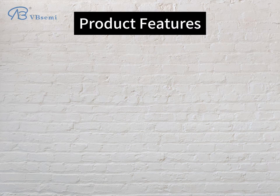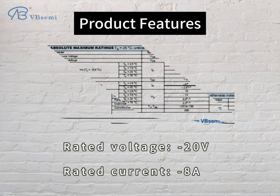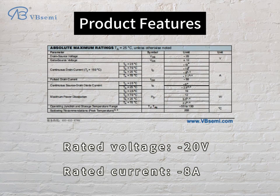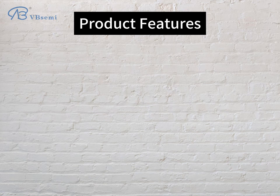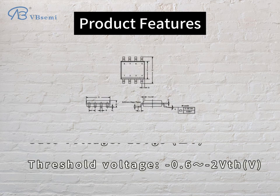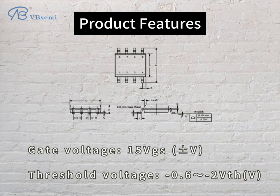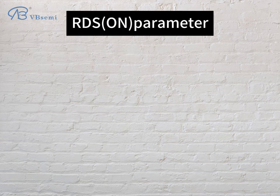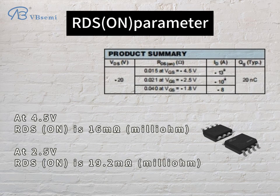Product features: rated voltage 420V, rated current 8A, gate voltage 15V (VGS), threshold voltage 0.6–2V (VTH). RDS(on) parameters: at 4.5V, RDS(on) is 16mΩ; at 2.5V, RDS(on) is 19.2mΩ.